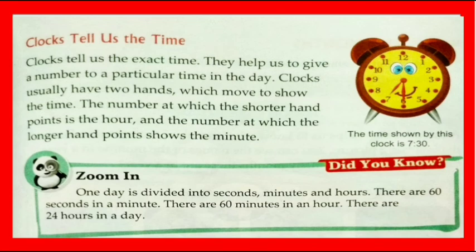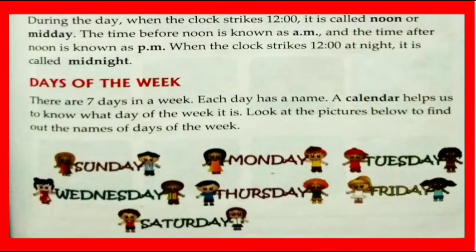You can see a clock in the image showing the time 7:30. Did you know one day is divided into seconds, minutes, and hours? There are 60 seconds in a minute, 60 minutes in an hour, and 24 hours in a day. During the day, when the clock strikes 12, it is called noon or midday. The time before noon is known as AM and the time after noon is known as PM.